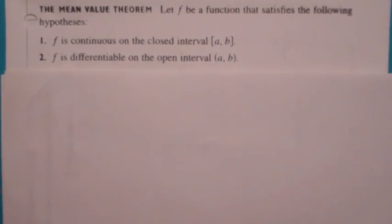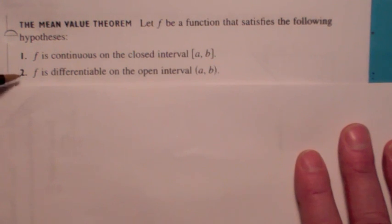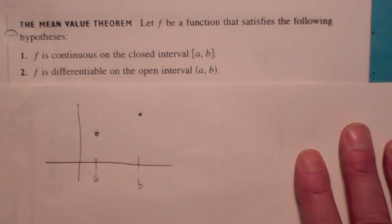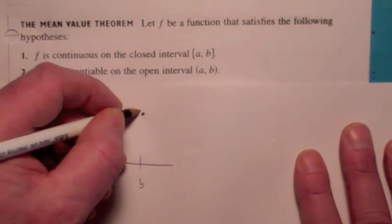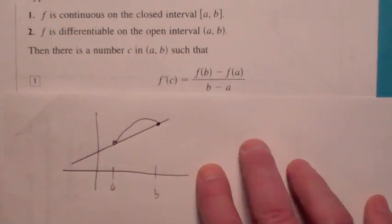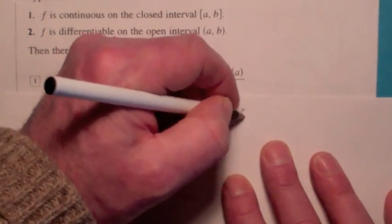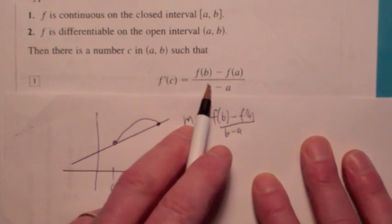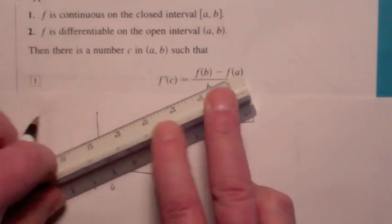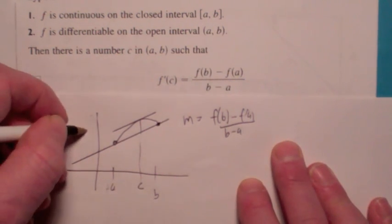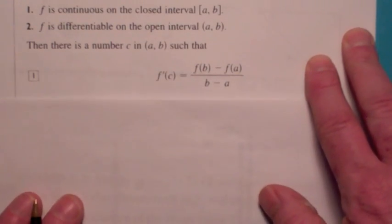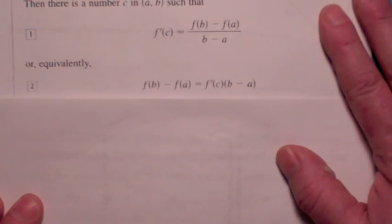Now we'll use Rolle's Theorem to prove the Mean Value Theorem. The MVT has the same hypotheses as Rolle's Theorem except we don't require f(a) = f(b). The conclusion says the slope of the secant line — f(b) minus f(a) over b minus a — has to equal the slope of the tangent line at some value c in the interval a to b. If you draw a line parallel to the secant line until it hits the curve, there's some value x = c where the tangent slope equals the secant slope. We usually write the MVT by multiplying both sides by (b − a).